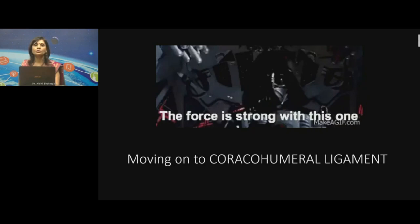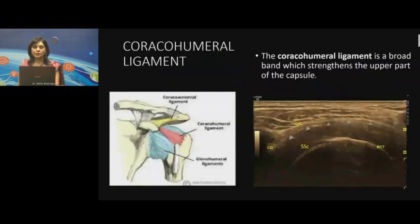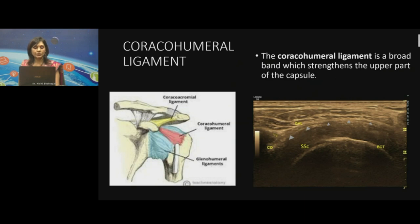Moving on to the coracohumeral ligament — if you are able to interpret it on ultrasound in adhesive capsulitis, that's the point where a good diagnosis can be provided to the clinician. The capsule is covered by a triangular strong fibrous structure extending from the coracoid process up to the tuberosities. It gives strength to the superior part of the shoulder by stabilizing it, running obliquely downwards and laterally from the coracoid process, blending with the supraspinatus and the capsule.